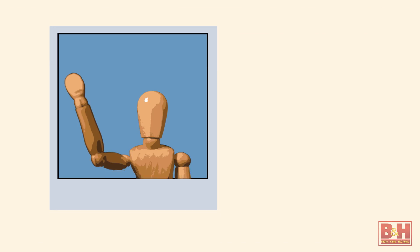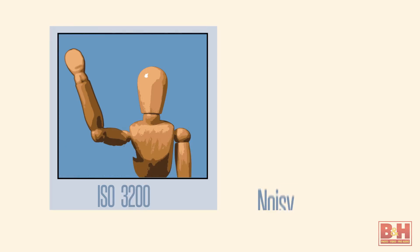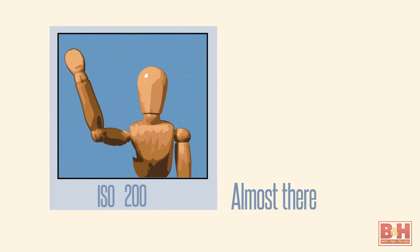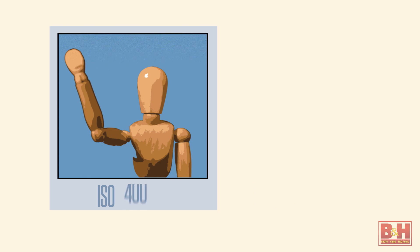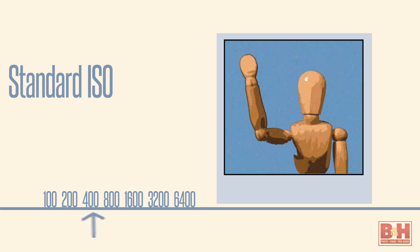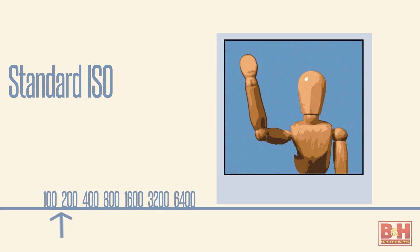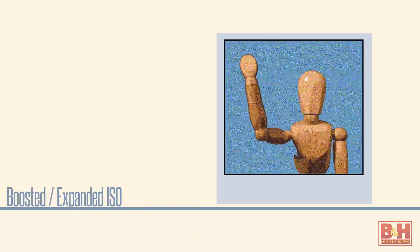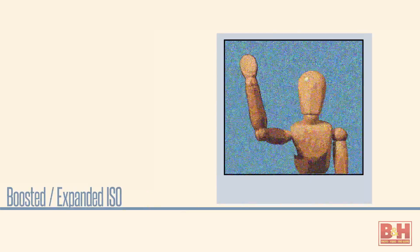Well, they're all related. Native ISO is the setting with the best signal-to-noise ratio — it's actually where the sensor signal needs the least amount of adjustment to deliver the image, so theoretically it also has the least image noise. Then by amplifying the signal a little or a lot, you get what most of us call the standard ISO range. Usually the more amplified the setting, the more noise you're going to see. Boosted or expanded usually means even more amplified, and by definition numbers below the standard ISO range could also be considered expanded ISO settings.